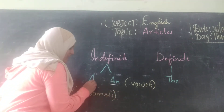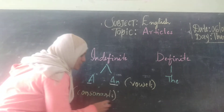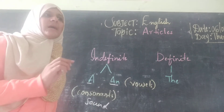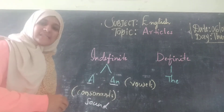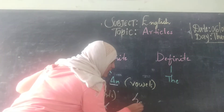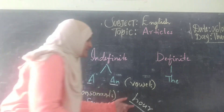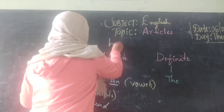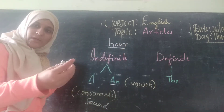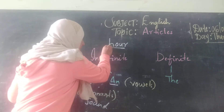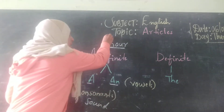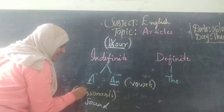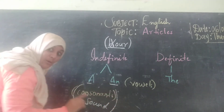'A' is used before a consonant sound. It is most important to focus on the sound whenever you pronounce a word. For example, consider 'hour' — you might think it begins with H, so you'd say 'a hour,' but the H in 'hour' is silent. We are not supposed to pronounce the H. Hence, consonant sounds matter a lot.